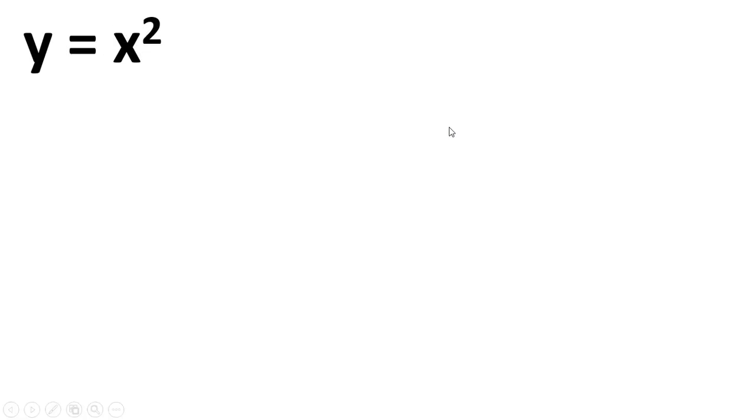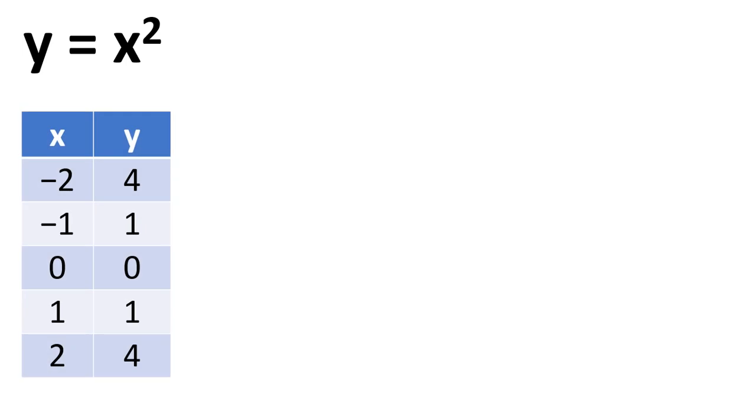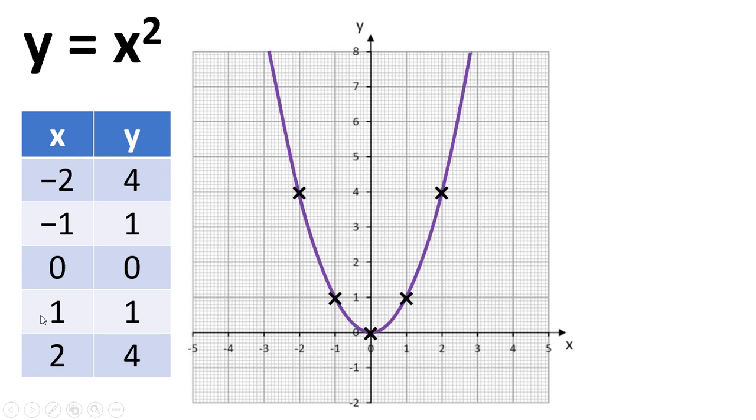So let's take the example of y equals x squared. And if we work out the value of y for various values of x, we can plot a graph. We can then start to draw tangents to these points, and we can work out gradients.